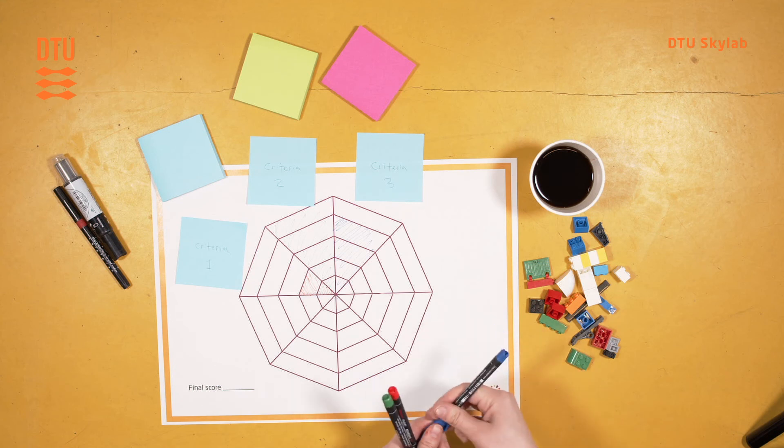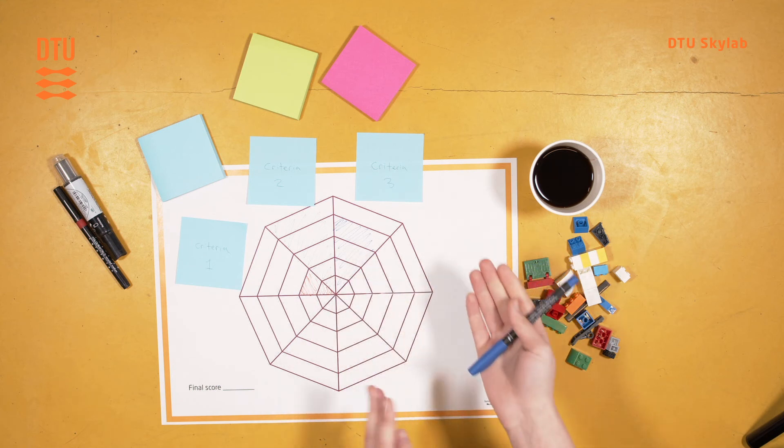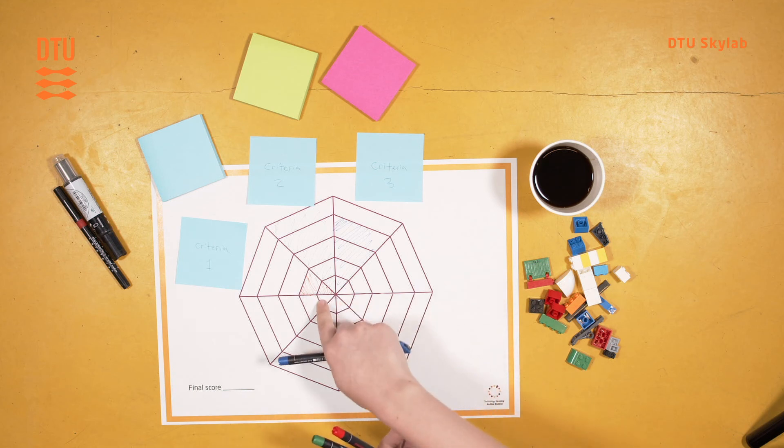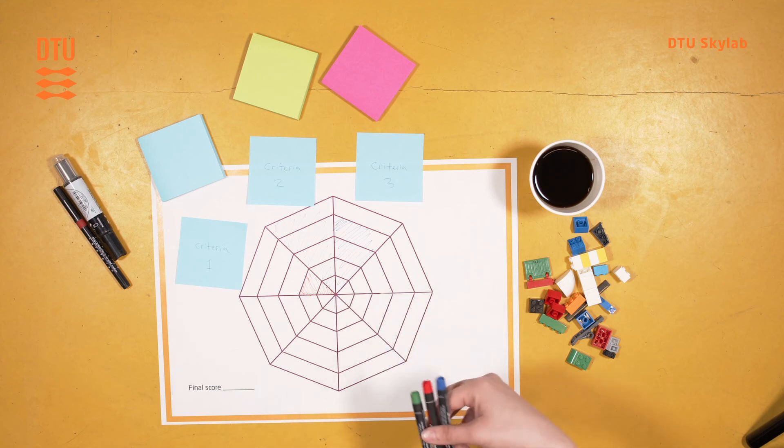Then after you color in all of your criteria, you can count the score. So here we have a two plus five plus four. So that gives a score of 11, which you can then put down here in a corner.